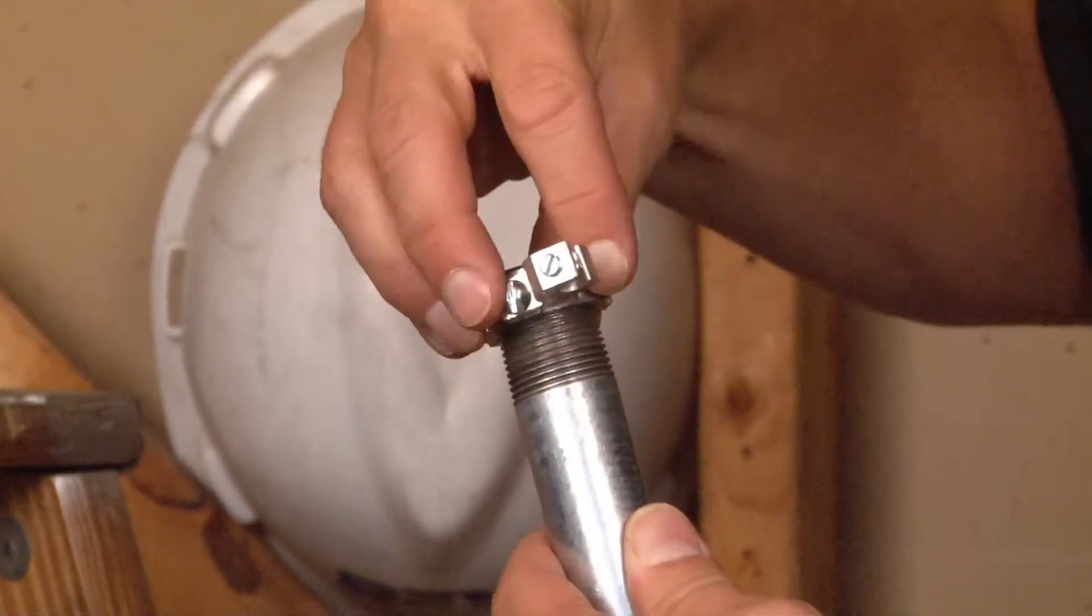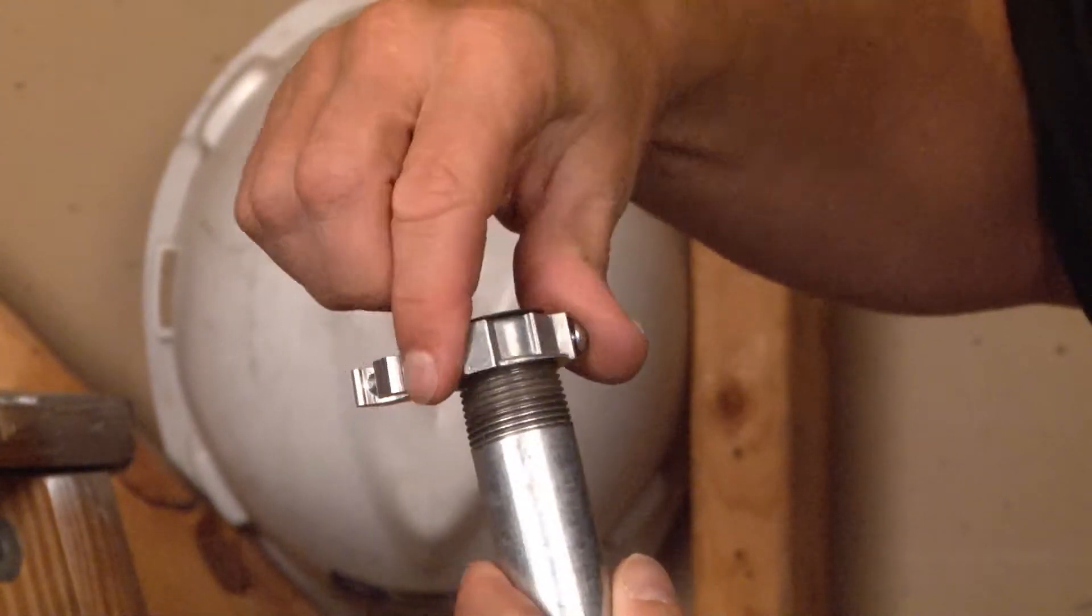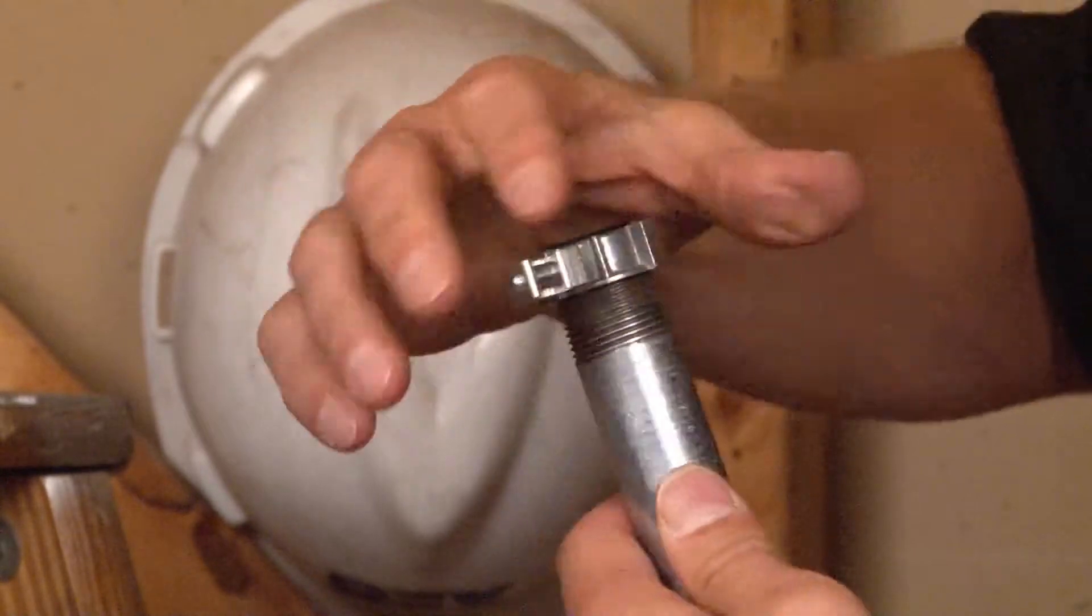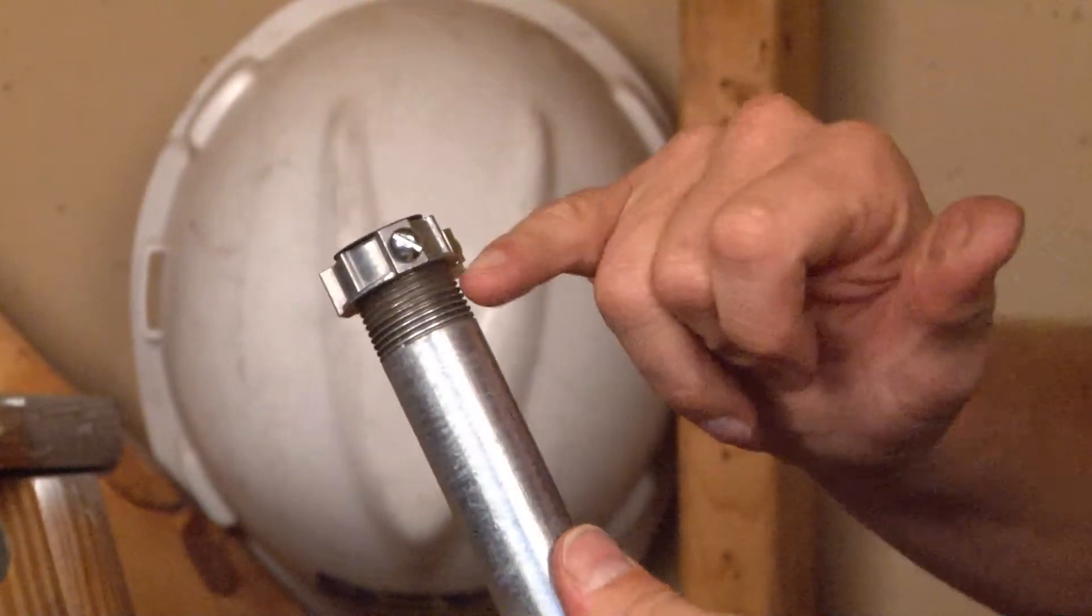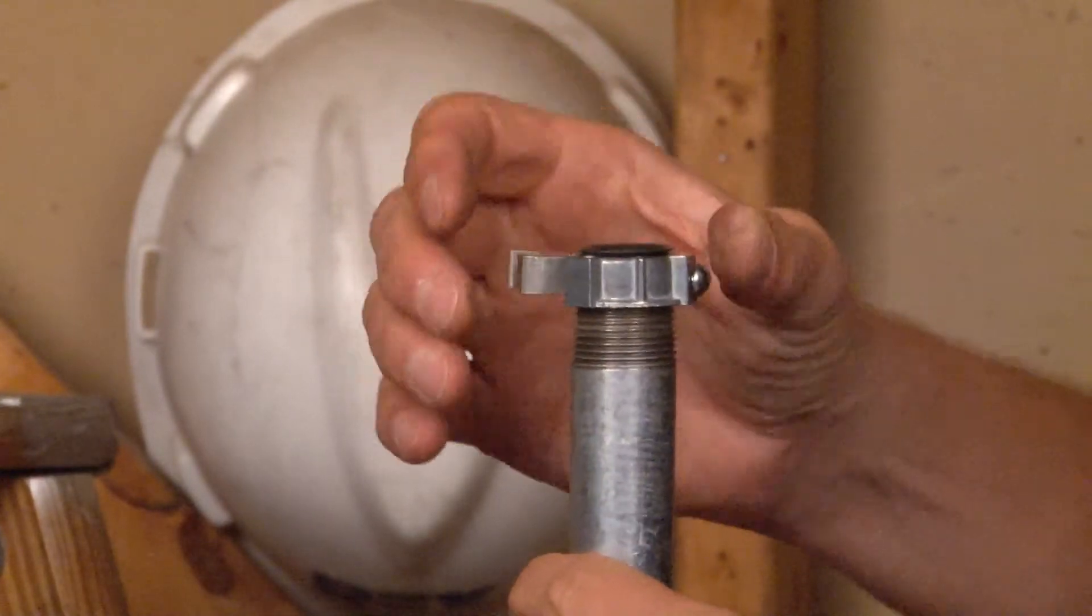Once they're properly aligned, the threads bite together and you can screw it on the pipe all the way down as tight as possible to ensure you get a positive ground.